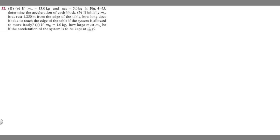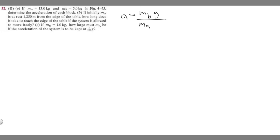So in the last problem, you solved for the equation for this — the equation that represents these different variables for acceleration. You should have gotten that acceleration is equal to m sub b times g over m sub a plus m sub b. This was the equation used for the last one in problem 51. And now we're given the masses so we can actually go ahead and solve for the acceleration.